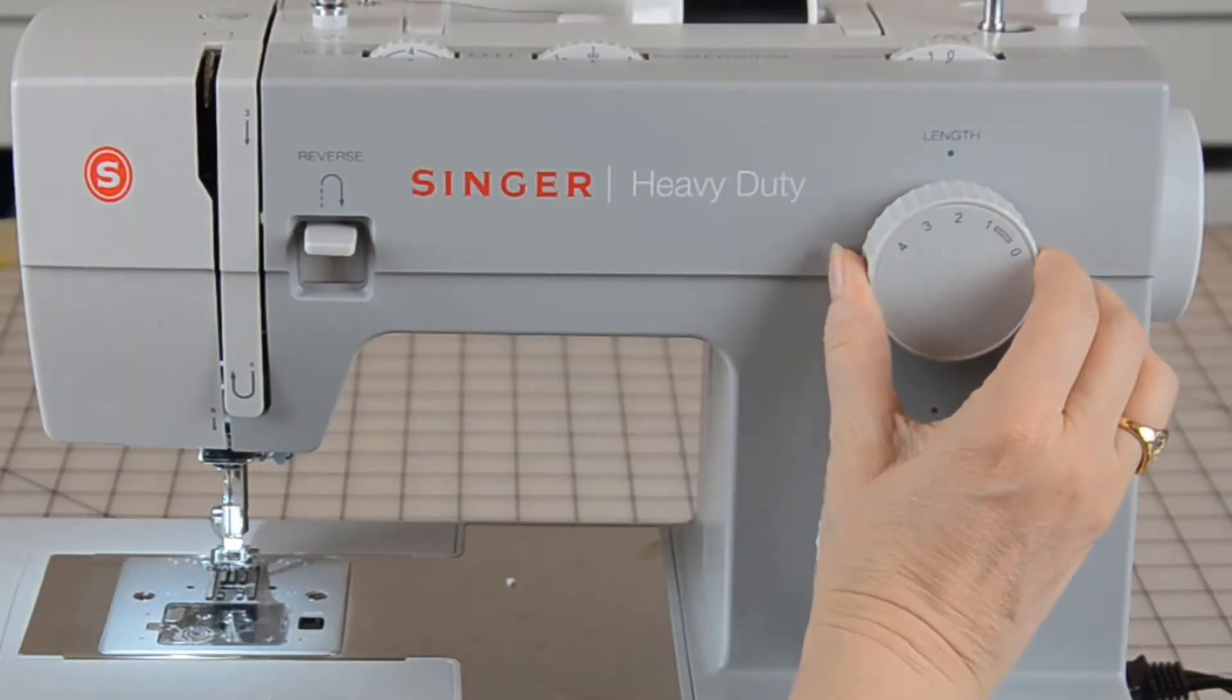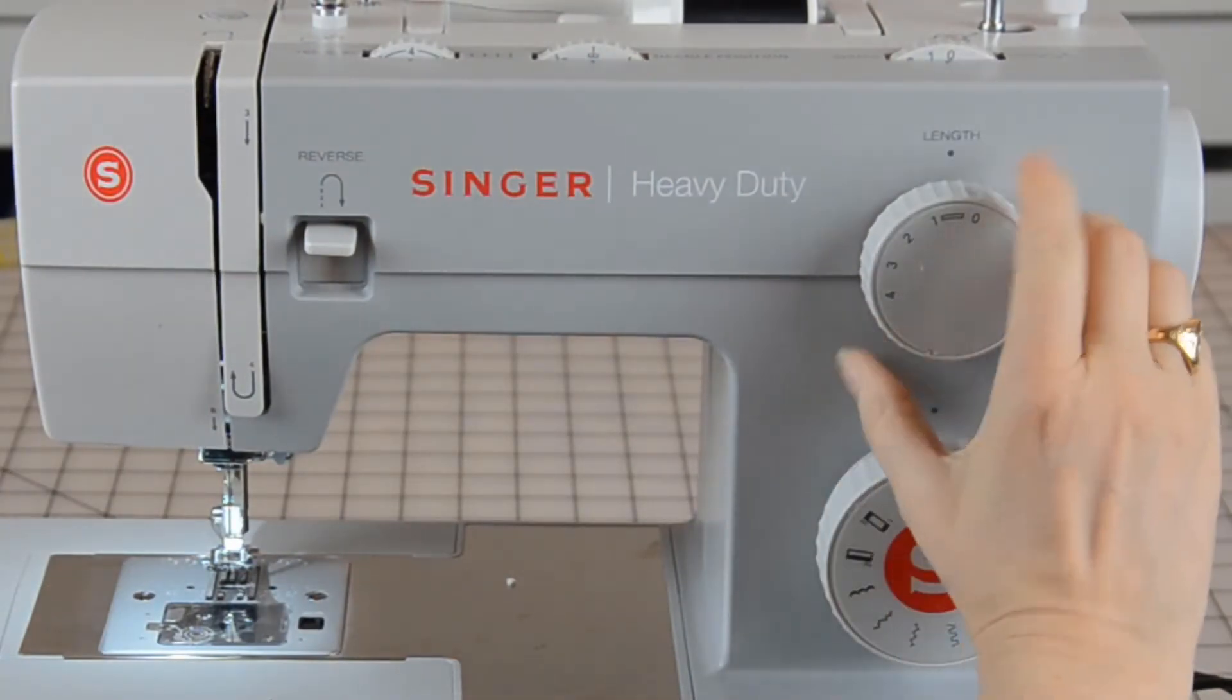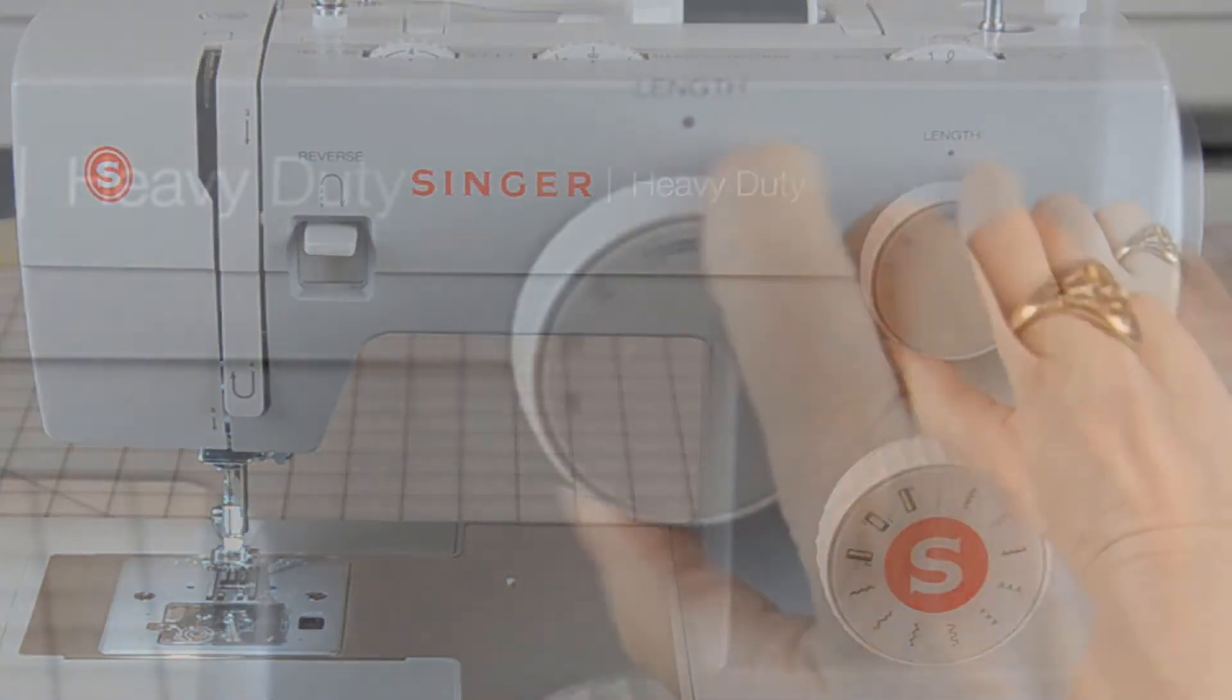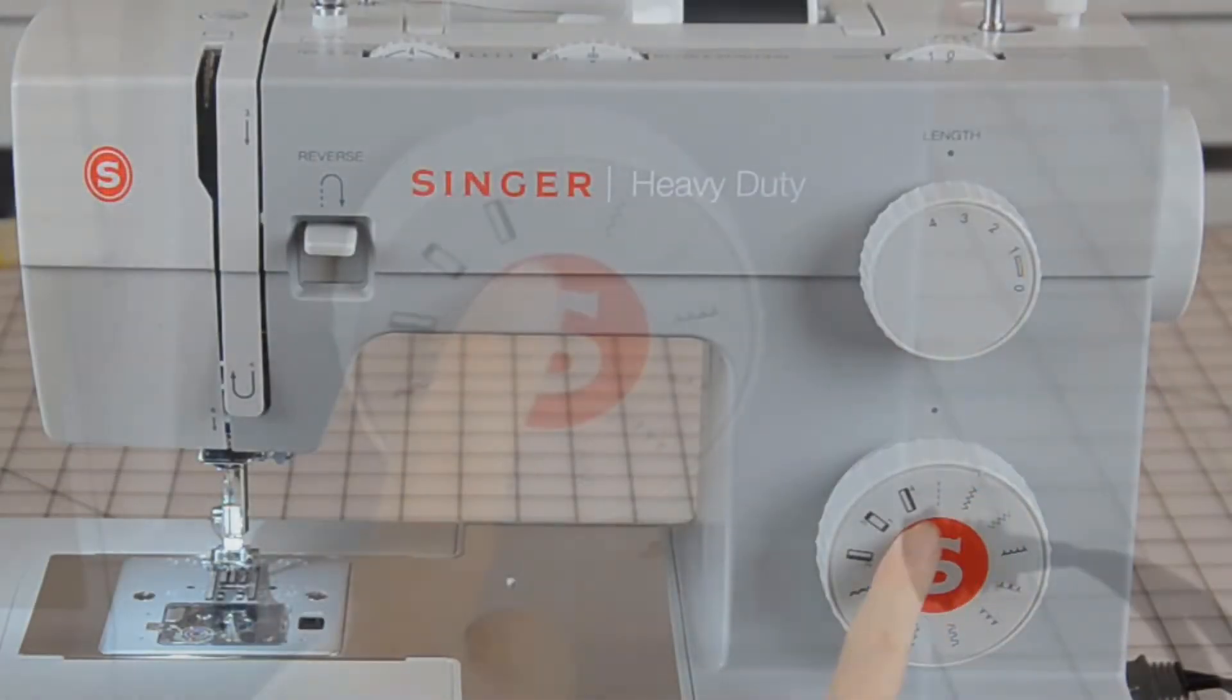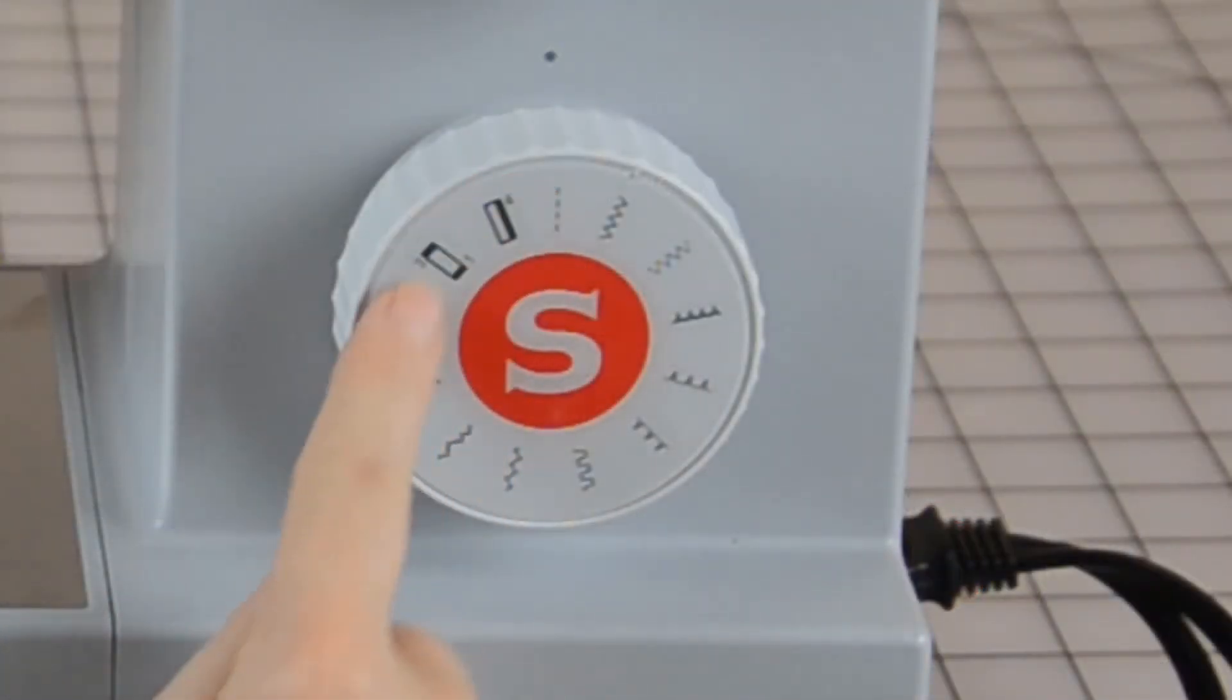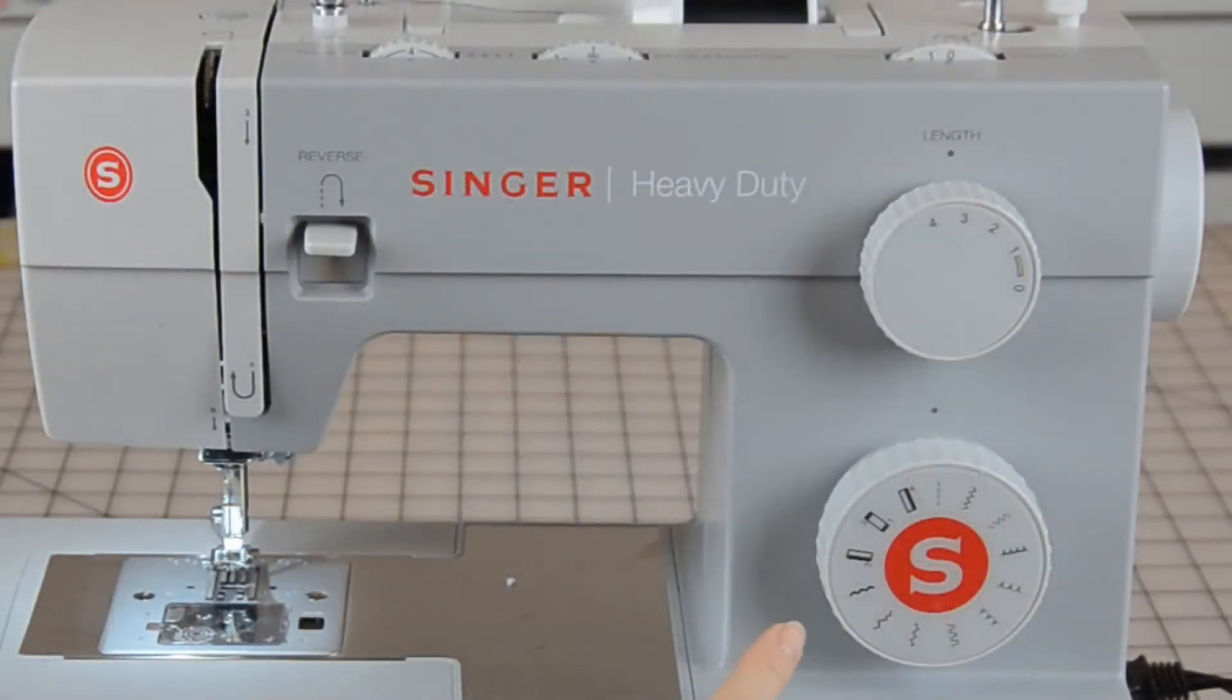Check the settings on the machine. For a straight stitch, which is what you'll do most of the time, the length should be set at about three. The bottom knob is set at a little dotted line straight stitch. Other stitches that you can choose from are ones for buttonholes and a variety of zigzag stitches.